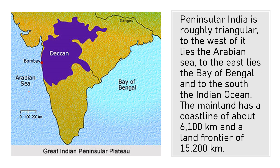To the west of it lies the Arabian Sea, to the east lies the Bay of Bengal, and the Indian Ocean lies to the south. The coastline extends for nearly 6,100 kilometers and the land frontier is 15,200 kilometers.